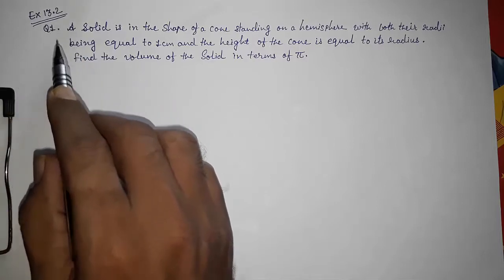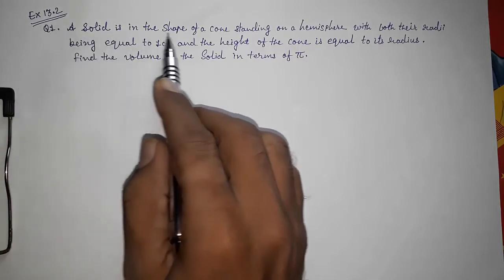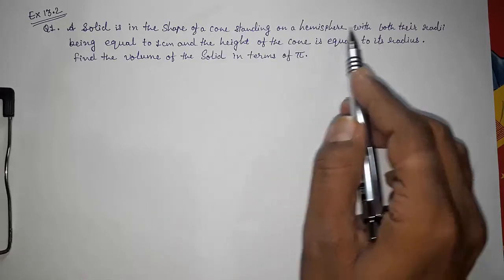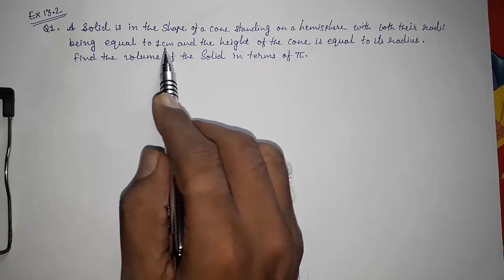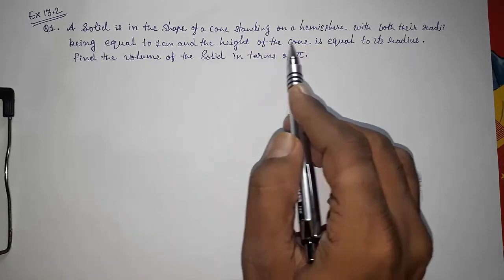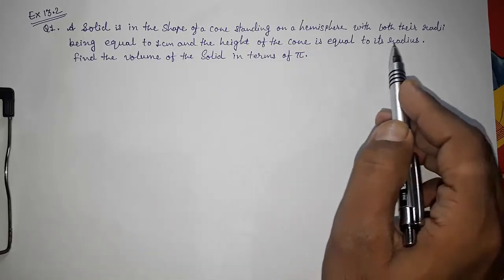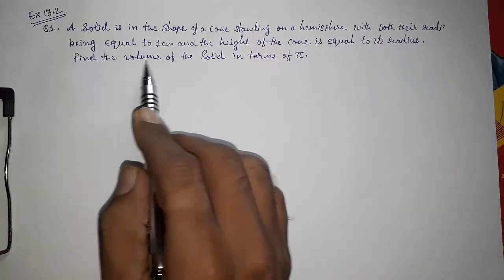Question number 1: A solid is in the shape of a cone standing on a hemisphere with both their radii being equal to 1 cm and the height of the cone is equal to its radius. Find the volume of the solid in terms of π.